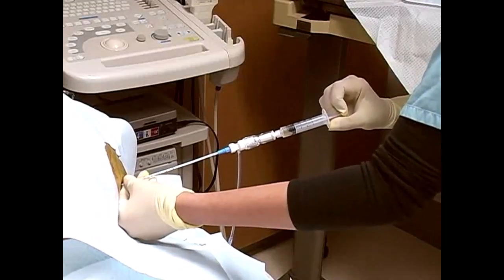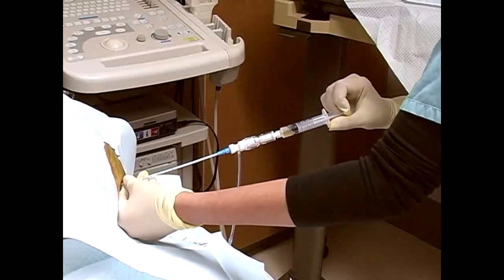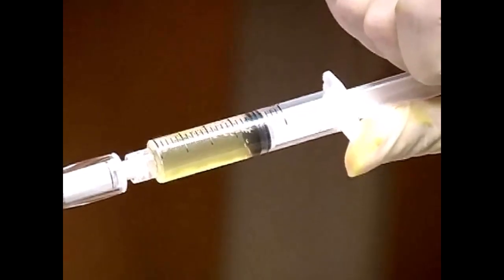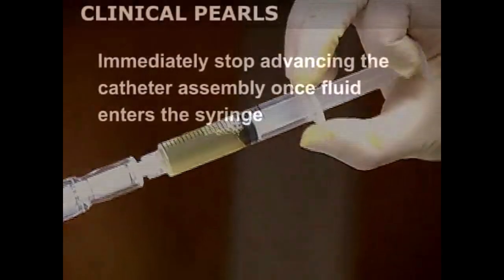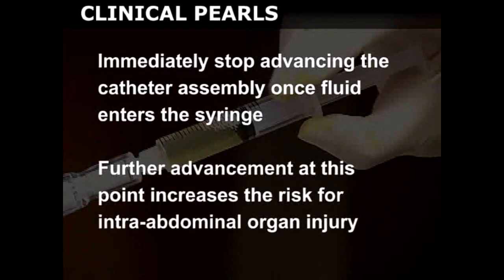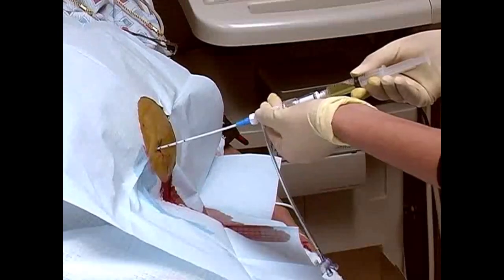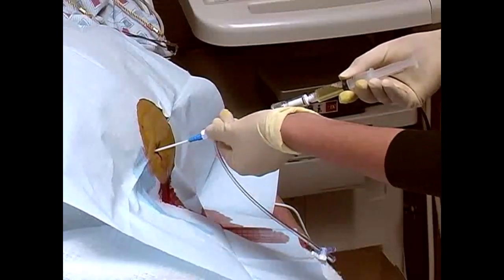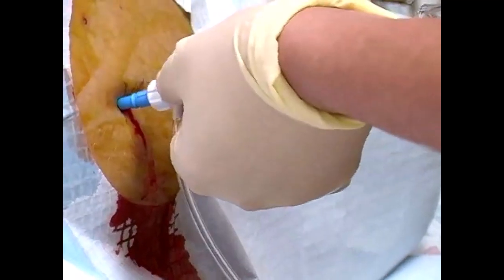Intermittently pull back on the plunger as you advance. Entry into the peritoneal cavity will be heralded by aspiration of ascitic fluid. Immediately stop advancing the catheter assembly once fluid enters the syringe, as further advancement of the needle increases the risk for intra-abdominal organ injury. While keeping the needle stationary, gently advance the catheter over the needle and into the abdomen.